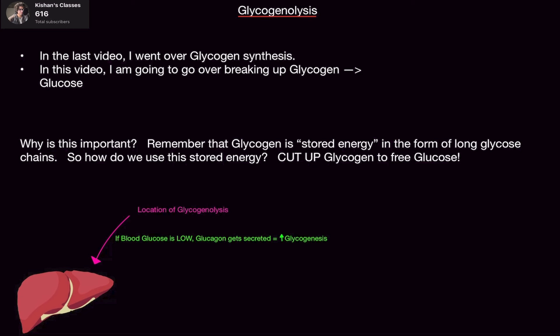Now why is this important, and when is it actually implemented in your body? First, what is glycogen? Glycogen is simply large glucose molecules that are chained up — multiple glucose molecules in a long chain — and it's a way to store energy. Think of it as a currency in a bank; it's a bank for energy. To actually use this energy, we cannot use glycogen in that form; we need to break it up into glucose.